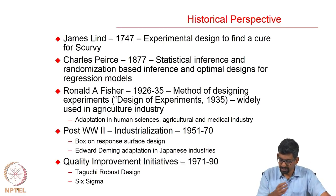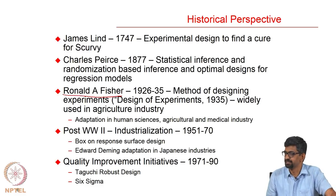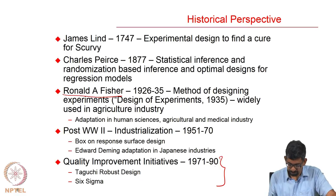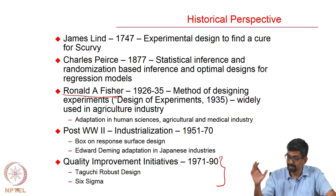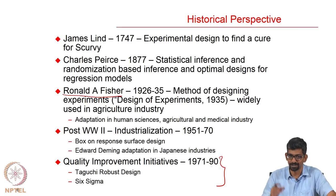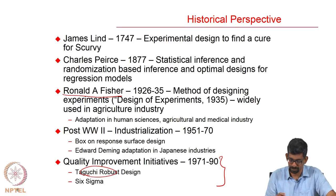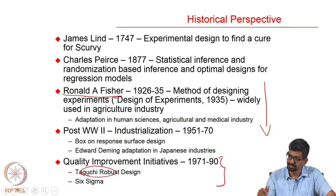From a historical perspective, DOE started with a cure for a particular disease. Fisher — who is associated with the Fisher information matrix — is a big name in design of experiments. It actually picked up in the modern era between the 1970s and 1980s when people wanted to produce quality products. It started during World War 2 because decisions had to be made very quickly. The biggest advantage of Taguchi techniques is that from the outcome you can directly identify and control factor analysis.